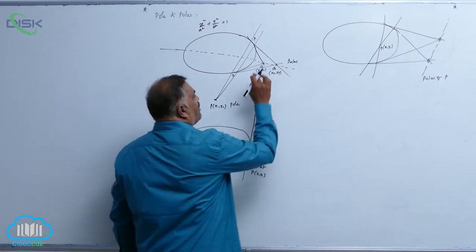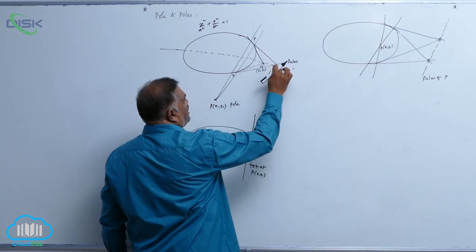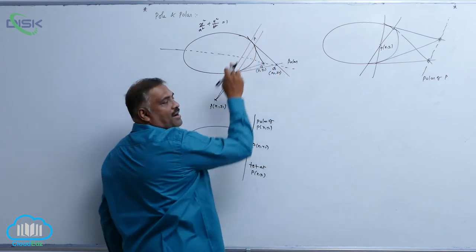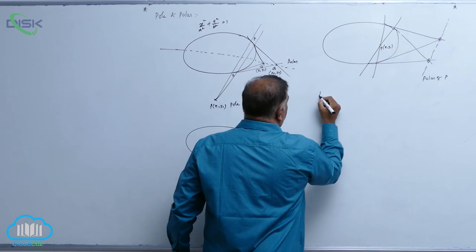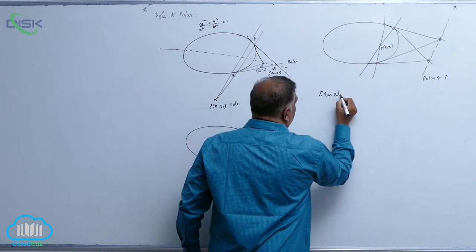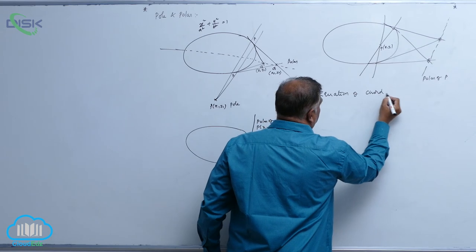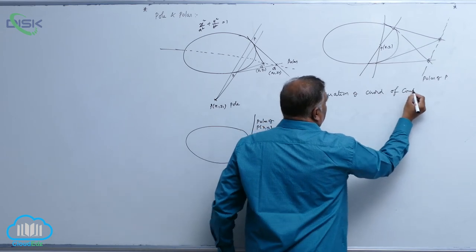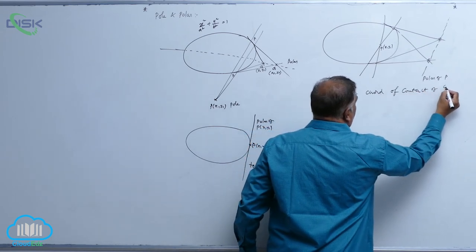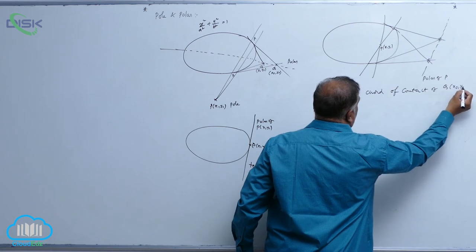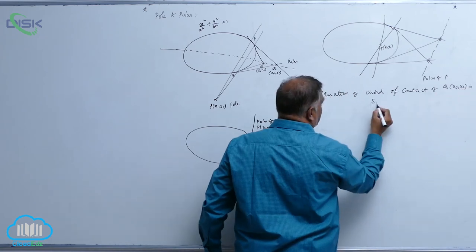Now you observe that for any point Q(x0, y0), this will become chord of contact. So equation of chord of contact is given by: chord of contact of Q(x0, y0) is S1 equal to 0, x x0 by a square plus y y0 by b square equal to 1.